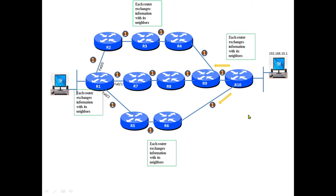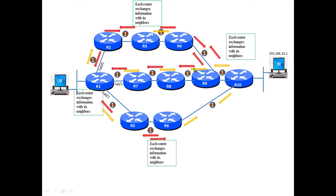R1 is connected with a subnet, so it is R1's responsibility to send this information to R2 and to R5. R5 then broadcasts whatever it has received from its neighbor routers to the remaining routers immediately connected to it. In this way, all routers exchange information about the networks to which they are connected, and each router has a responsibility to announce the networks it is connected to.